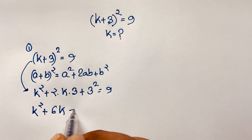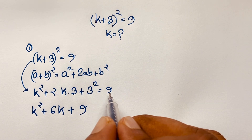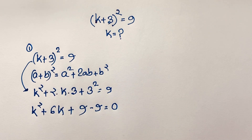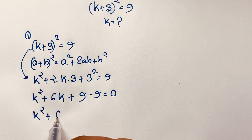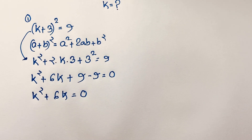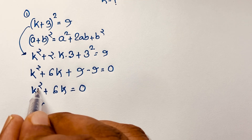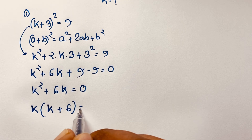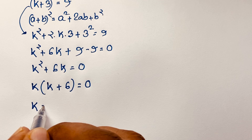That gives us k² + 6k + 9 = 9. If I move the 9 to this side it will be negative, so k² + 6k = 0, since 9 minus 9 is 0. Taking k as common, we get k(k + 6) = 0, giving two cases: k = 0 or k = −6.